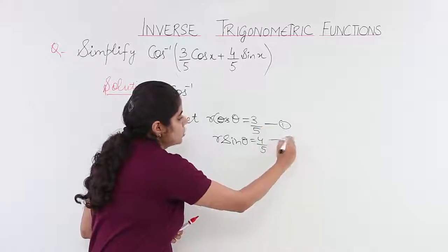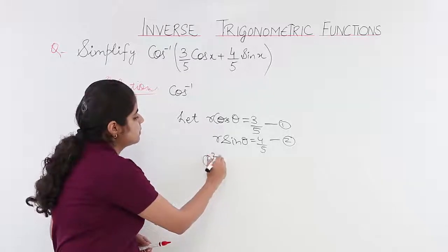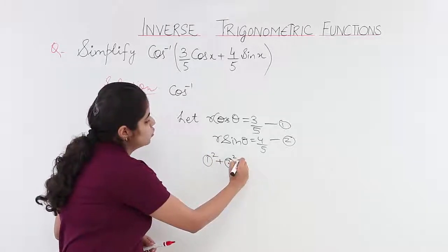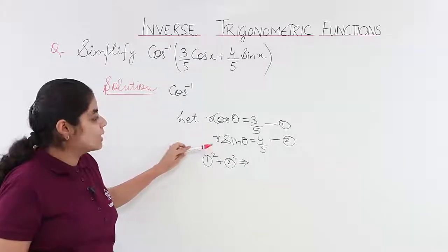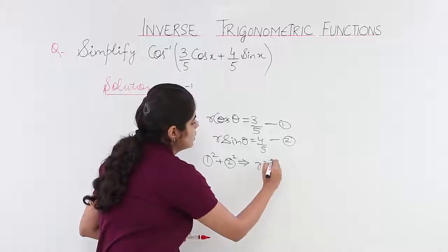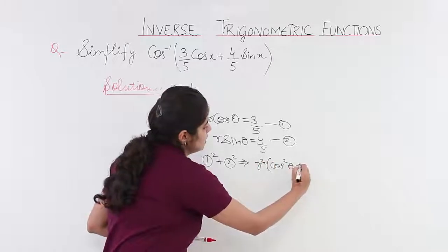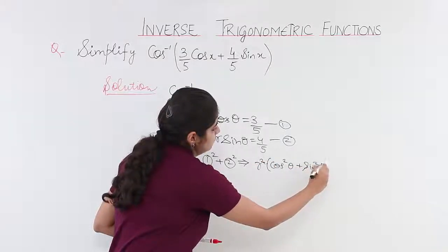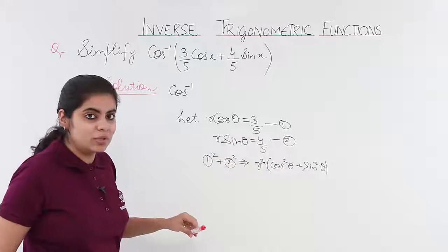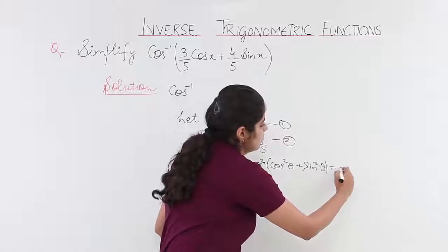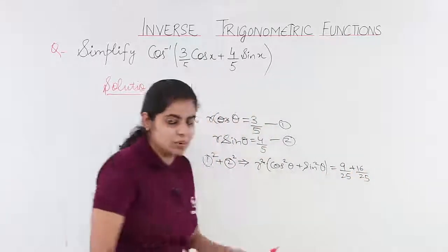We can make two equations and square and add them. So it becomes r² cos²θ + r² sin²θ, where r² is common, giving r²(cos²θ + sin²θ). On the right-hand side, it is (3/5)² + (4/5)².